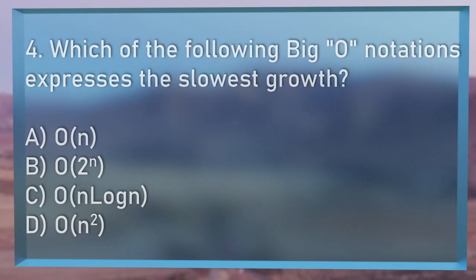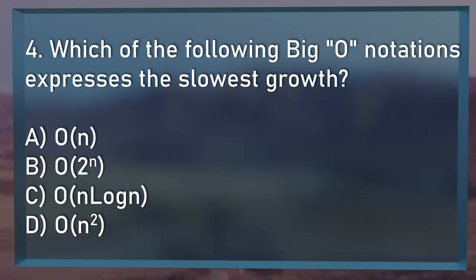Question number 4 — this is going to get a little bit computer science-y. I hope you've brushed up on your big O notation. Which of the following big O notations expresses the slowest growth? Is it A, O(N); B, O(2^N); C, O(N log N); or D, O(N²)? Which grows the slowest? One of those big O's is considerably faster than the others.